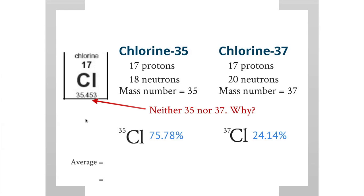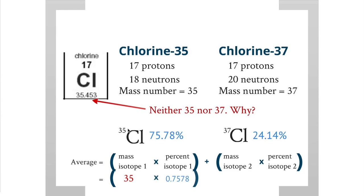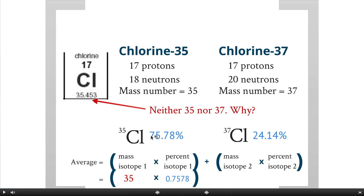So the average atomic mass is going to be the mass of isotope 1 multiplied by the percent of isotope 1, and we're going to add to it the mass of isotope 2 multiplied by the percent of isotope 2. In this example, the average atomic mass is going to be 35 (the mass of chlorine-35) multiplied by the percent 0.7578. That's how you convert this percent into a decimal: just move it to the left.